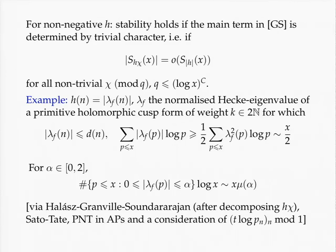So the first three conditions can be established. The fourth condition takes a little more work. One way to proceed is to split this function again into essentially bounded parts, apply Halász's result in the form Granville and Soundararajan gave, and reduce matters to a consideration of a sequence essentially modulo 1, using a combination of the Sato-Tate distribution, the prime number theorem in arithmetic progressions, and consideration of the distribution of dilates of log p_n modulo 1.